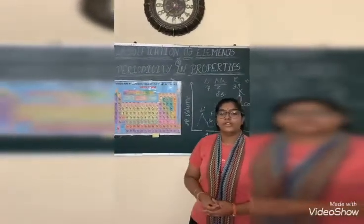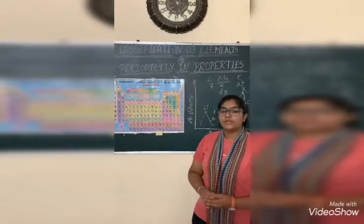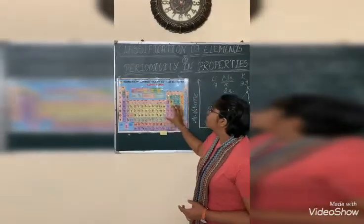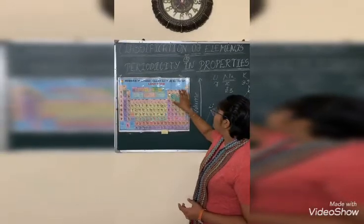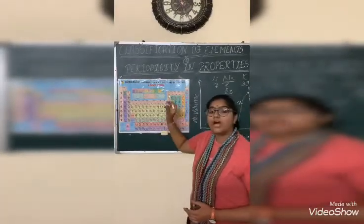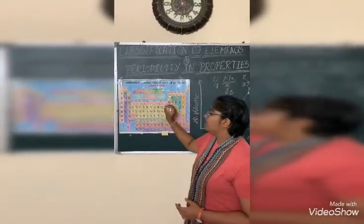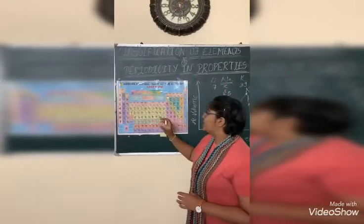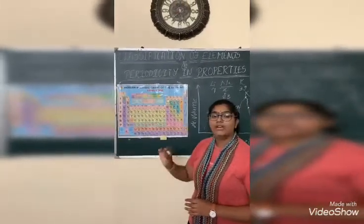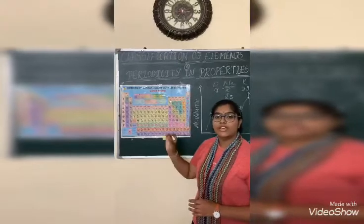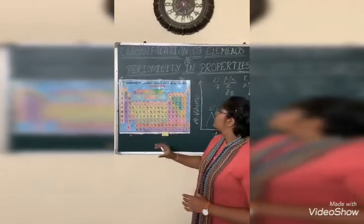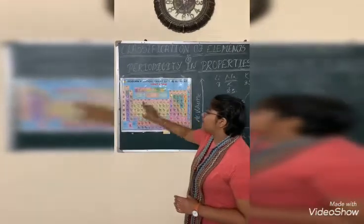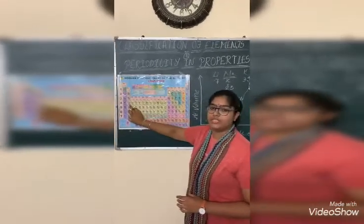The next rule is Newlands' Law of Octaves. He told that the properties of elements repeat after every 8 elements — like the notes of Indian music: Sa, Re, Ga, Ma, Pa, Dha, Ni, and then Sa again. But this was not true for all elements, as it was only applicable up to Calcium.